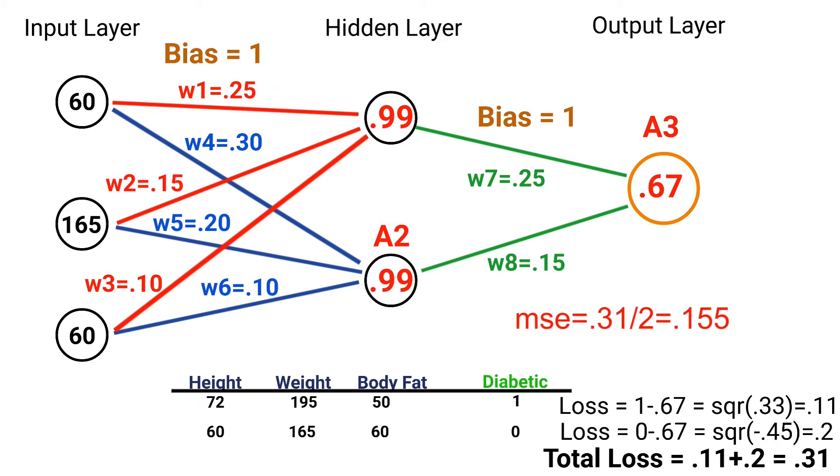The next thing that we do is take our total loss of 0.31, divide by the number of training examples, which is 2, and that gives us a total mean squared error of 0.155. Now mean squared error is the common method for calculating the total error.